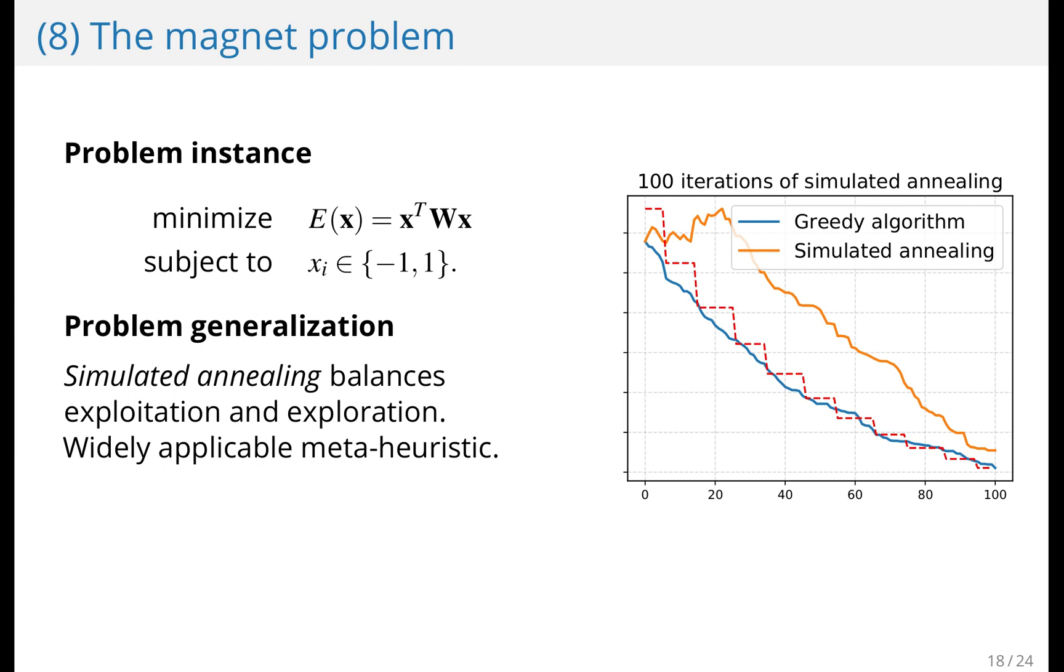One approach that might work in problems like this is simulated annealing, where the algorithm chooses a random permutation and just accepts it as better or moves to it if it's better than the previous one. Simulated annealing will initially allow worse solutions. So you see here, the graph for simulated annealing actually goes up initially.